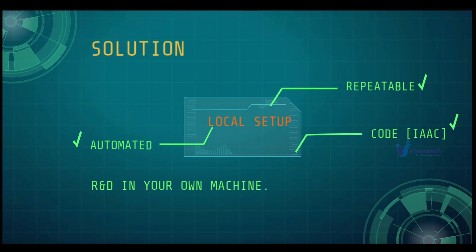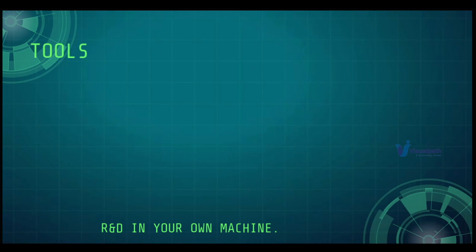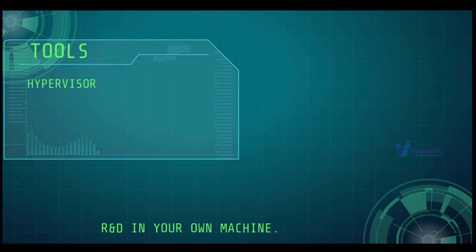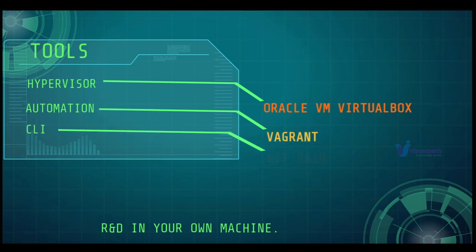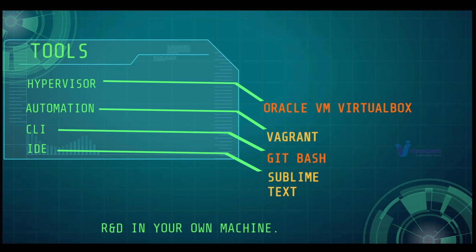Now let's see what tools we need to set up this stack. First, we will need a hypervisor — Oracle VM VirtualBox — on which we are going to set up virtual machines. Since this is going to be automated, we are going to use Vagrant for automation. We'll also need a command line tool, Git Bash, which is multi-purpose for executing commands and version control. We can also use an IDE such as Sublime Text, Notepad++, or Visual Studio Code. You should have all these tools installed already from the prerequisites video.